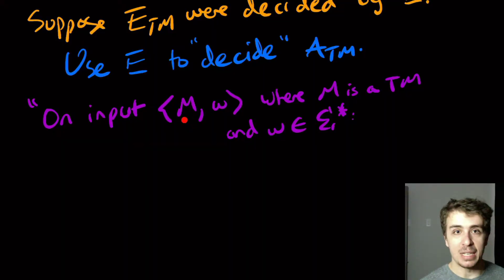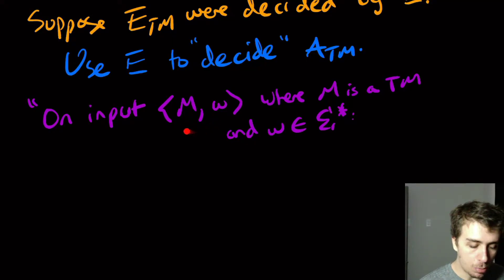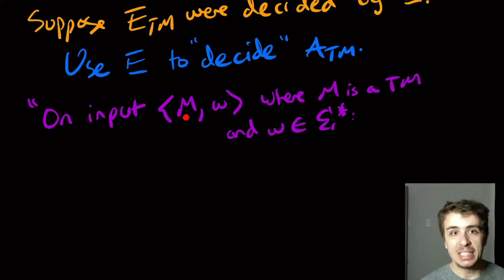But if we figure out that M's language is not empty, that doesn't answer whether or not it accepts W specifically. If it's not empty, it accepts some string, but I don't know which ones necessarily because E, its job is to figure out whether it's empty or not. It doesn't tell us what strings are accepted necessarily. So we need to be able to make a different machine that has empty language exactly when M accepts W.